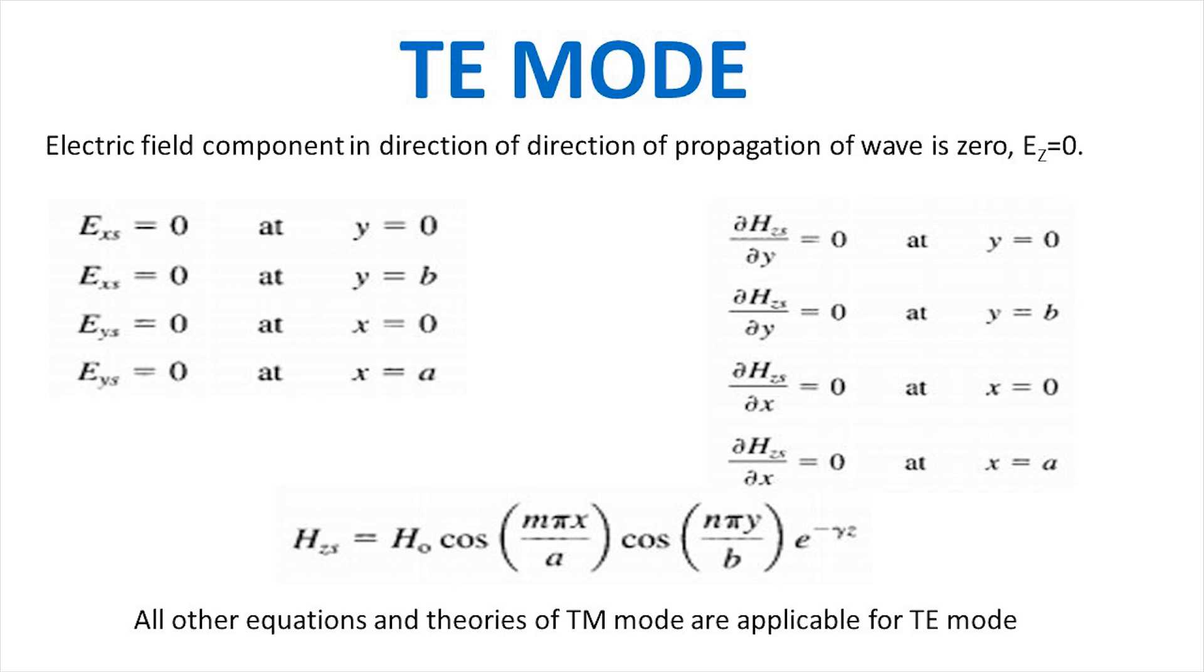In the TE modes, the electric field is transverse or normal to the direction of wave propagation. We set Ez equals to zero and determine other field components Ex, Ey, Hx, Hy, and Hz from Maxwell's equation of waveguide and the boundary condition as we did for the TM modes. The boundary conditions are obtained from the fact that the tangential component of electric field must be continuous at the walls of the waveguide. Imposing these boundary conditions, we can get the value of Hz. Other field components are easily obtained as they were obtained for TE mode.